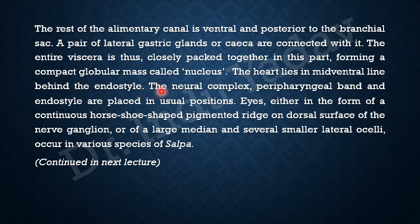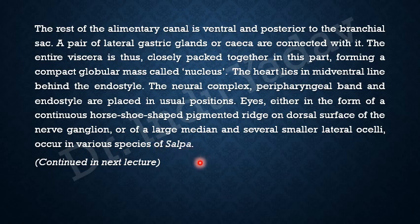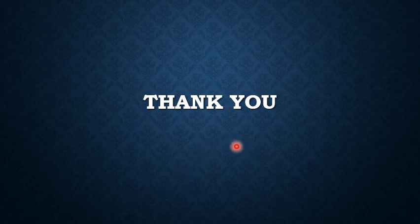The neural complex, peri-pharyngeal band, and endostyle are placed in individual positions. Eyes are either in the form of a continuous horseshoe-shaped pigmented bridge on the dorsal surface of the nerve ganglion, or a large median and several smaller lateral ocelli occur in various species of Salpa. This was the structure of Salpa, and in the next lecture I will continue. Thank you for now, and look forward to another lecture on the structure of Salpa.